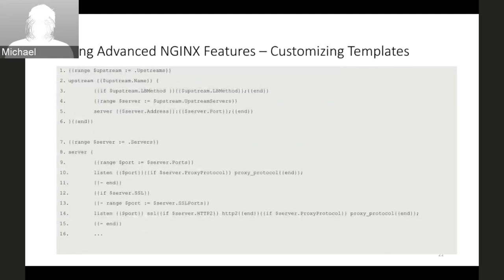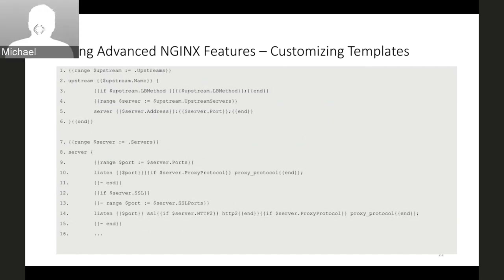The final way you can use advanced features with NGINX is by customizing the templates. The Ingress controller software generates configuration from a template, and you can customize the template and change it in a way that makes sense for your requirements. This is one of several options you can use to configure advanced NGINX features.